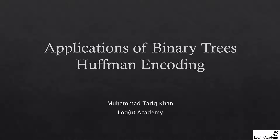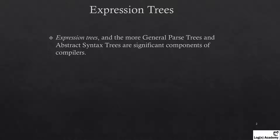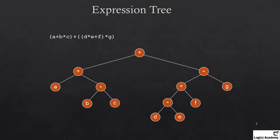To compress the data — let's start this lecture. We have expression trees, which also use binary trees for representing expressions. Expression trees and the more general parse trees and abstract syntax trees are significant components of compilers. Binary trees are used by compilers for parsing expressions, as you can see here with an example expression. My focus in this lecture is Huffman encoding.